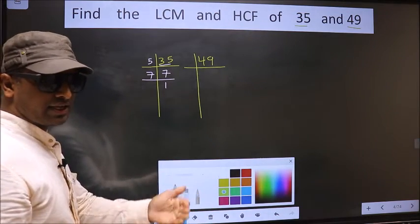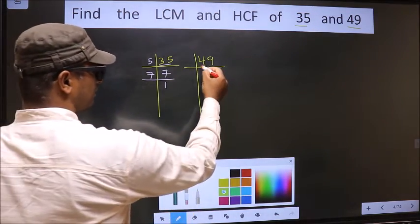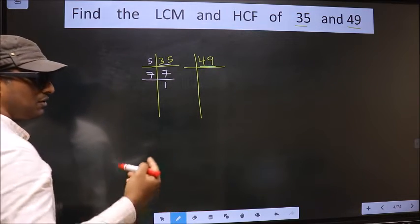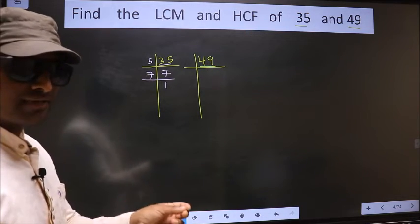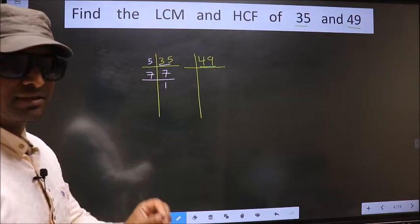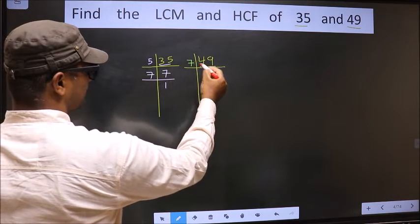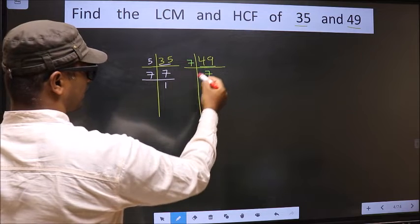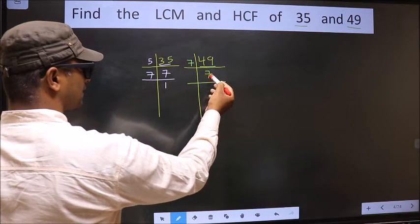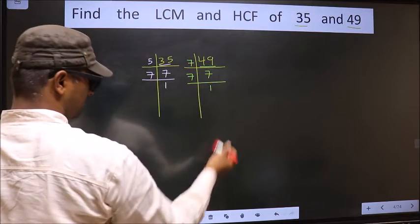Now the other number is 49. Always remember, 7 squared is 49. 7 times 7 is 49. So we take here 7 times 7 is 49. Now we have 7, 7 is a prime number, so 7 times 1 is 7.